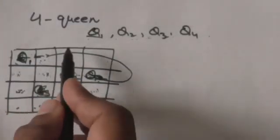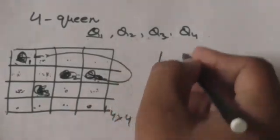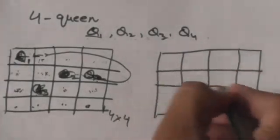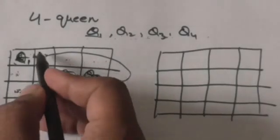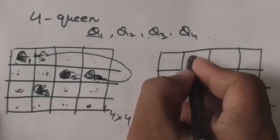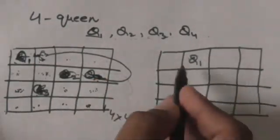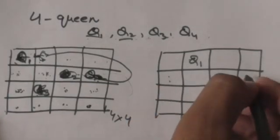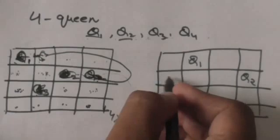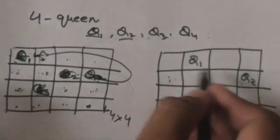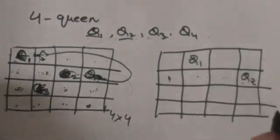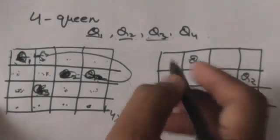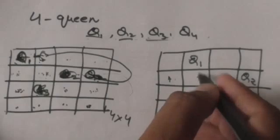Queen Q1 has three more options. Suppose we choose the second square of the first row to place Q1. Now we have to place Q2 in the second row. For Q2 we have only one valid option in the second row, because placing it in any of the other three squares would result in an attack by Q1. Now we have to place queen Q3 in the third row, and Q3 also has only one valid option.